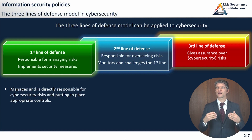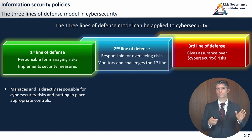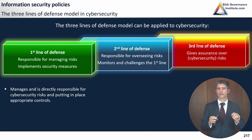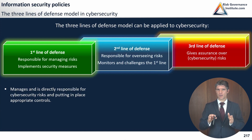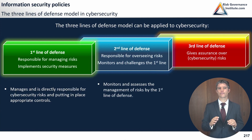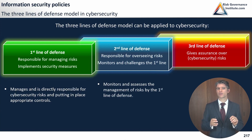To go into more detail: the first line of defense manages and is directly responsible for cybersecurity risks and putting in place appropriate controls. If something goes wrong, they are the ones that get blamed. You have to understand that management kind of straddles the first and second lines of defense — they have roles in both — but when something goes wrong, management is responsible in this first-line-of-defense capacity.